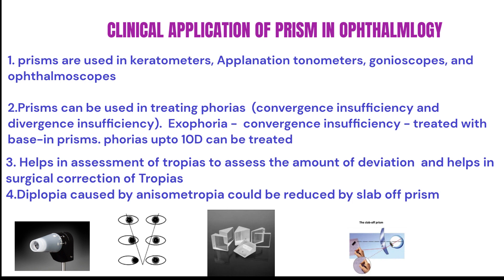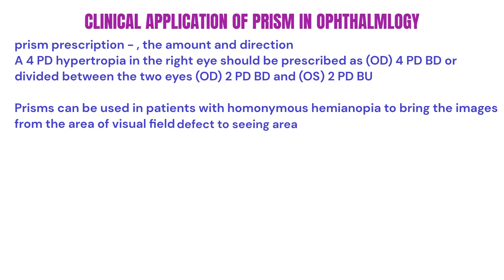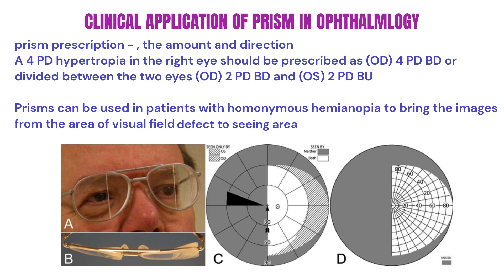Sometimes patients with anisometropia experience double vision while reading if they look off-center because of the prismatic effect of different lenses. This can be reduced by using vertical prisms known as slab-off prisms. When a prism is prescribed, the amount and direction should be mentioned. For example, a 4 prism diopter hypotropia in the right eye should be prescribed as 4 prism diopters base down in the right eye, or divided between the two eyes as 2 prism diopters base down in the right eye and 2 prism diopters base up in the left eye. Prisms can also be used in patients with homonymous hemianopia to bring images from the area of visual field defect to the area where vision is intact.